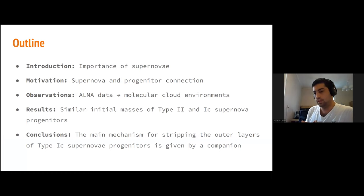The motivation is that we have only a few detections of the progenitor star before the supernova explosion. So one way to study this is to study the environment of the supernova, that is, the molecular cloud which is the onset of star formation. In this case, I'm going to use ALMA data.